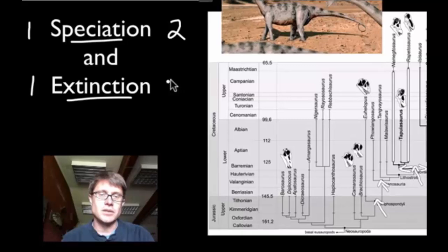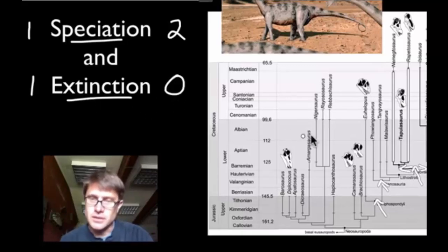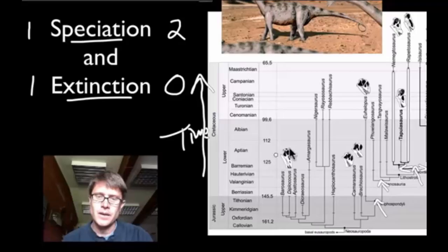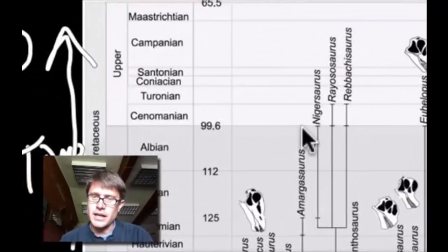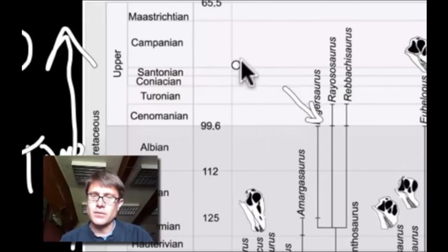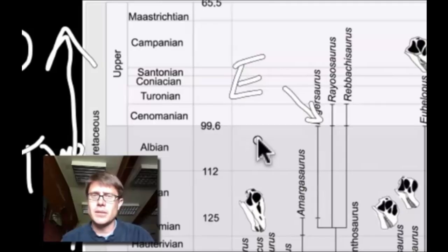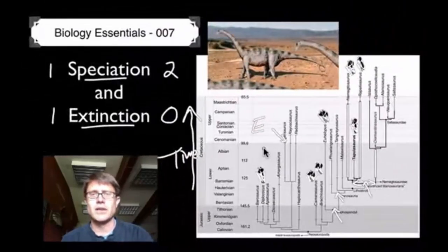Extinction is when you go from one species to zero species. On the side we have time — millions of years ago — and you can see that some of these will end. Nigerosaurus right here ends, meaning it went extinct. In life we go from that first common ancestor of all life, and we've gotten diversity through speciation, but also a lot of extinctions. The survivors are surviving on the backs of those that don't survive.